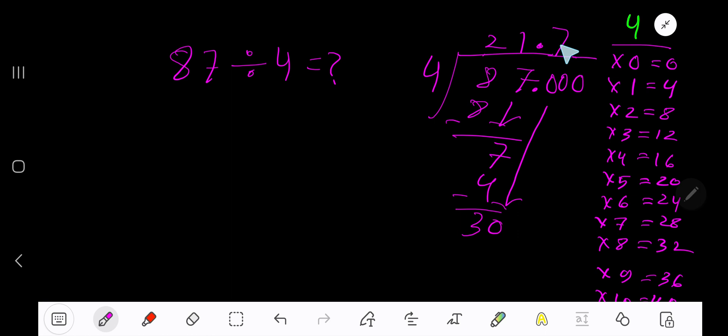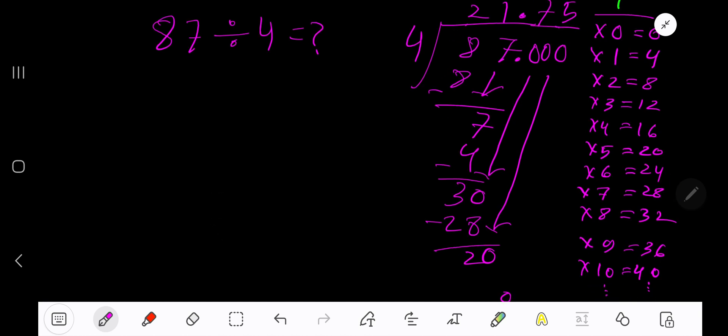So 7 times. Write 7. 7 times 4 is 28. If you subtract, you are getting 2. Bring down another 0, 20. 4 goes into 20 how many times? 4 goes into 20 five times. 5 times 4 is 20.